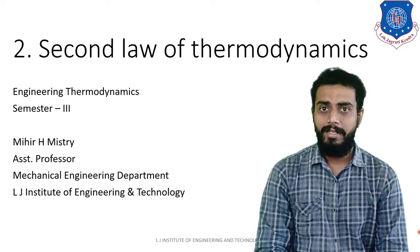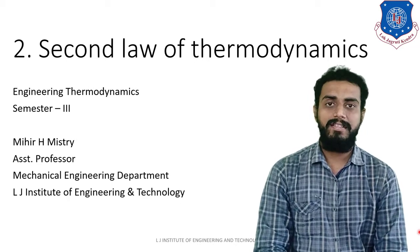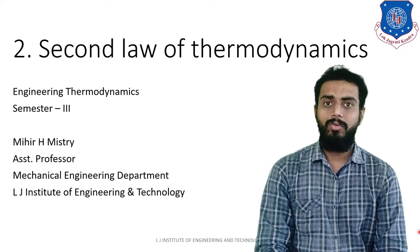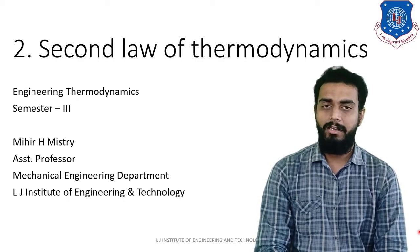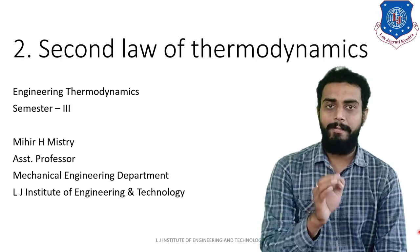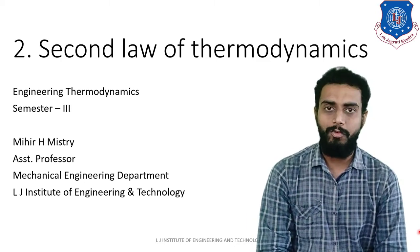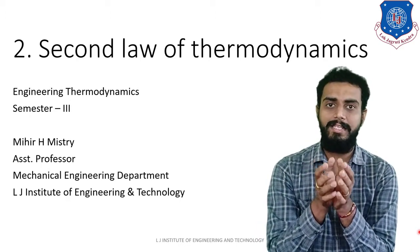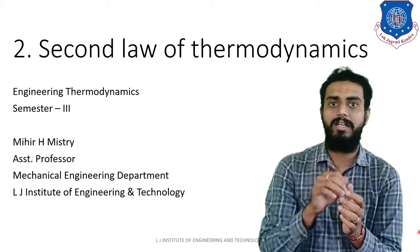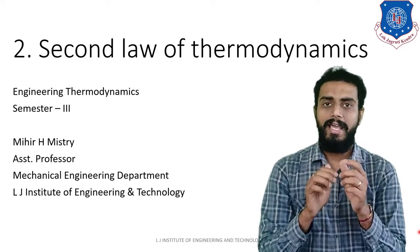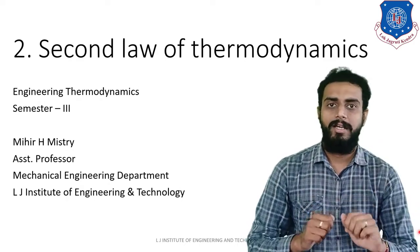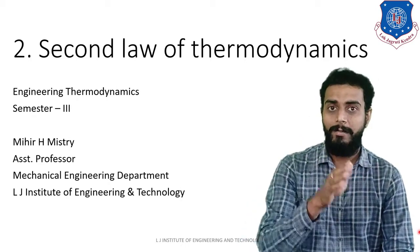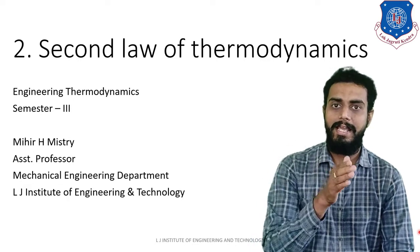In the Kelvin-Planck Statement, it is impossible for a cyclic engine or cyclic device to exchange heat with a single reservoir only and produce net work. That means if you have an engine, it must exchange heat with two reservoirs — a high temperature and a low temperature reservoir. The meaning of reservoir — source and sink — has already been discussed; refer to the previous lectures.